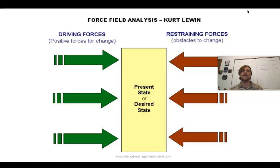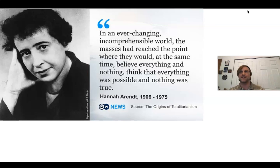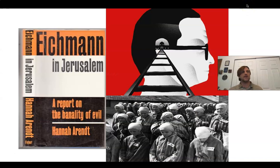It wasn't only social psychologists looking at Nazi Germany — philosophers also had a huge impact on psychology. Hannah Arendt, a famous scholar, wrote: 'In an ever-changing, incomprehensible world, the masses had reached the point where they would at the same time believe everything and nothing, think everything was possible and that nothing was true.' One of her most famous works is 'The Origins of Totalitarianism,' examining both Nazism in Germany and Soviet communism in Russia. She also wrote 'Eichmann in Jerusalem,' trying to understand how people made these decisions.